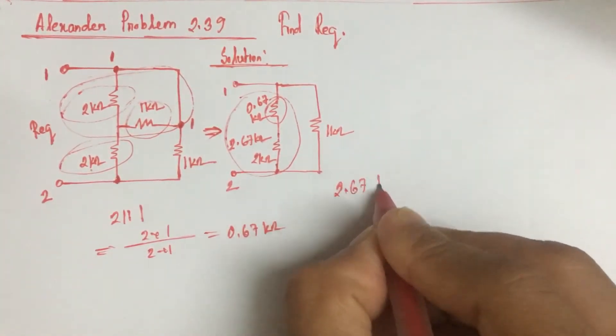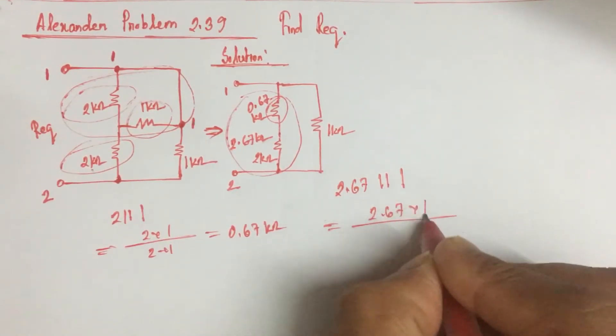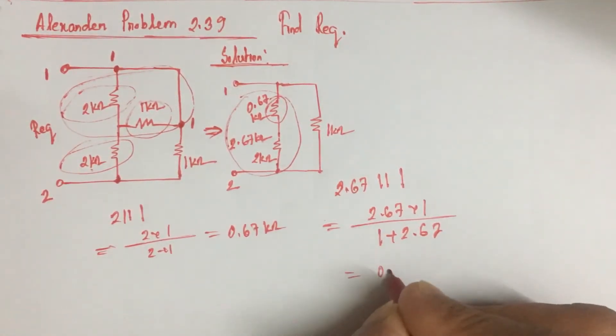2.67 parallel with 1 will yield 2.67 into 1 by 1 plus 2.67, that is 0.727 kilo ohm.